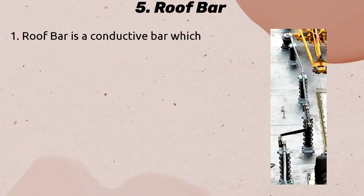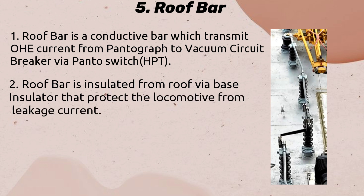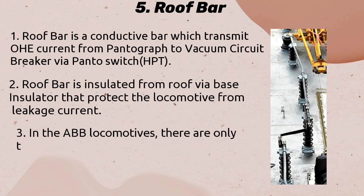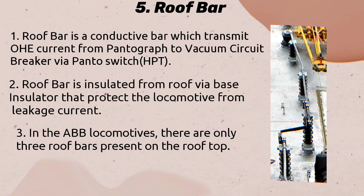Roof Bar: The roof bar is a conductive bar which transmits OHE current from the pantograph to the vacuum circuit breaker via the panto switch. The roof bar is insulated from the roof via a base insulator that protects the locomotive from leakage current. In ABB locomotives, there are only 3 roof bars present on the rooftop.